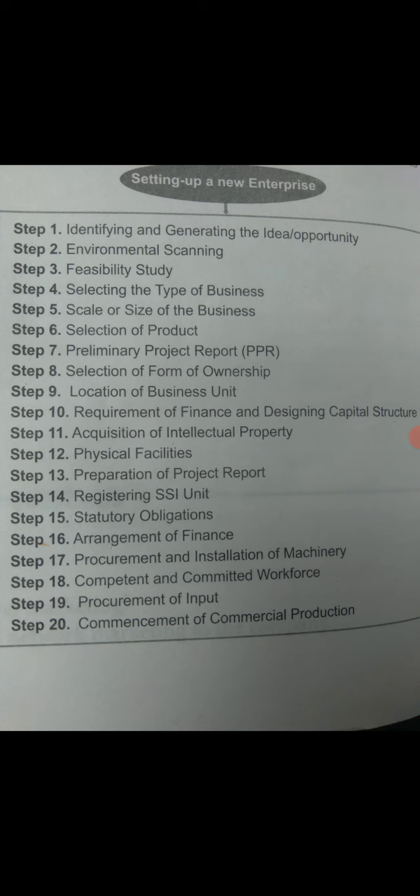The fourteenth step is registering the SSI unit. Although registration for small-scale industries is voluntary, it provides many benefits — such as government assistance, easier access to loans, and tax payment relaxations. It is always advisable for entrepreneurs to register their SSI unit. Registration can be provisional, which is initially valid for five years, or permanent, which is granted after production has commenced and is valid for a lifetime.